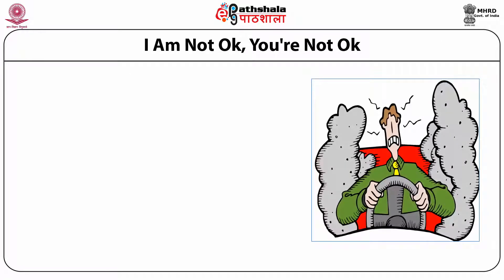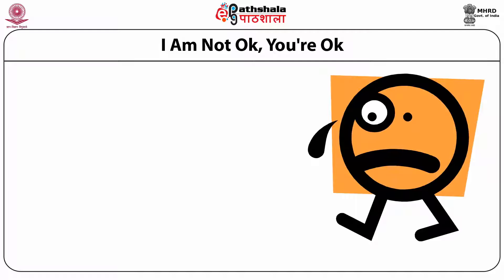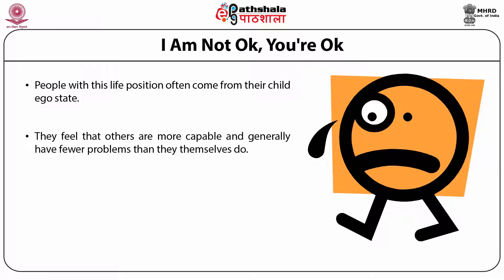People with the life position 'I am not okay, you are not okay' usually give up early in life. They do not trust other people and have no confidence in their self-worth or the worth of others. People who are driven towards suicide are often in this life position, constantly feeling they are not okay and others are also not okay. People with the position 'I am not okay, you are okay' often come from their child ego state. They feel others are more capable and generally have fewer problems, feeling that others are alright but they are not as comfortable.